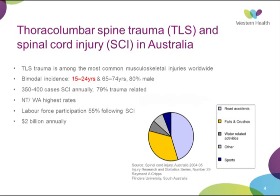Spinal trauma and spinal cord injury in Australia — it's one of the most common musculoskeletal injuries worldwide. There's a bimodal incidence: 15 to 24 year olds tend to be younger males from road traffic accidents, and then older females with osteoporosis. Overall, it's about 80% male. In Australia, there are about 350 to 400 cases of spinal cord injury annually and about 79% of these are trauma related. Northern Territory and Western Australia have the highest rates. Following spinal cord injury, only about 55% of people return to the workforce, costing us about $2 billion annually.